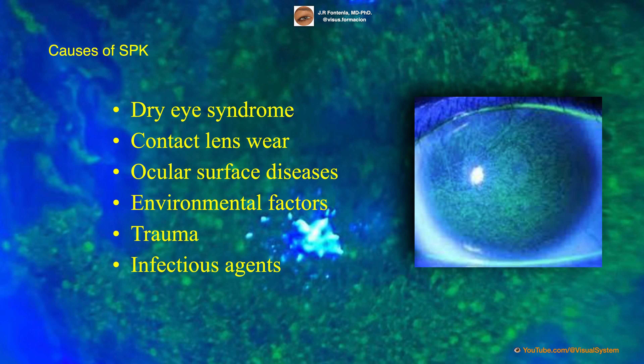Superficial punctate keratitis can be caused by a variety of factors, including dry eye syndrome, contact lens wear, ocular surface diseases, environmental factors such as exposure to wind or dust, trauma, and infectious agents such as viral or bacterial infections.